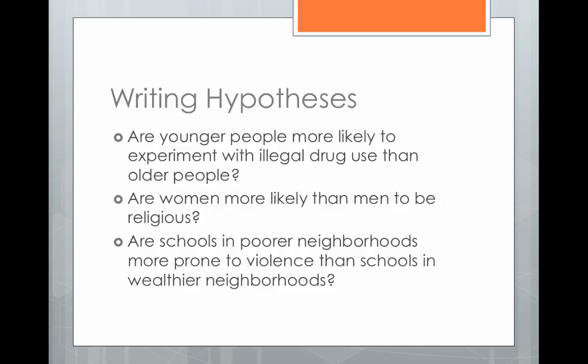For the second question — are women more likely than men to be religious? — the variables are gender and religiosity. The independent variable is gender, so the hypothesis would be: if you are a woman, then you are more likely to be religious. For the third question — are schools in poorer neighborhoods more prone to violence than schools in wealthier neighborhoods? — write down your hypothesis and be ready to talk about it in class on Thursday.